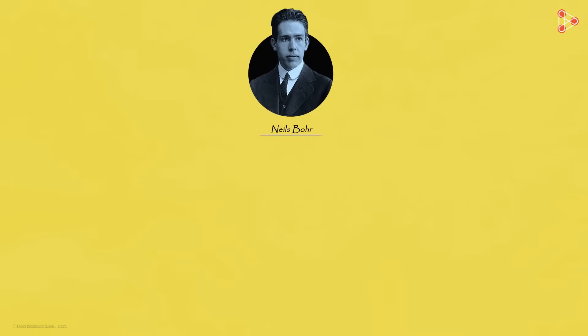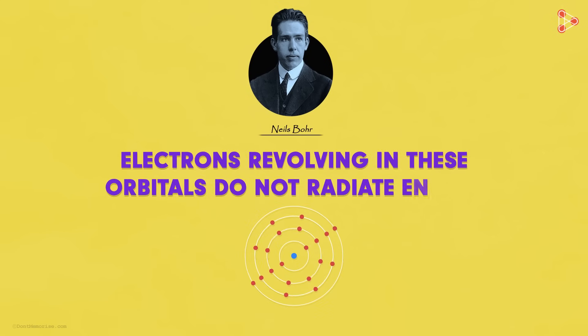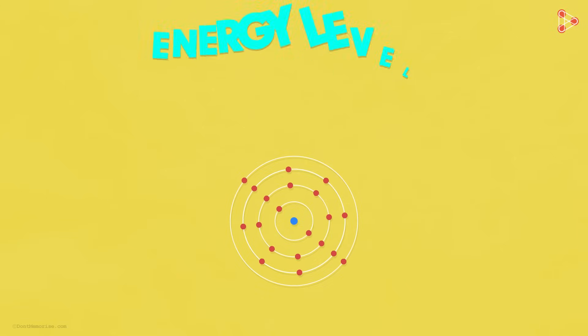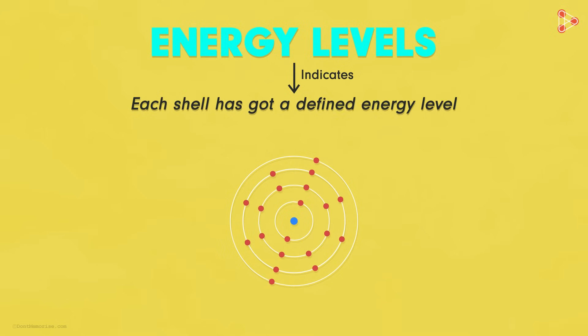Now the name energy levels gets us to an important concept. Niels Bohr suggested that the electrons revolving in these orbitals do not radiate energy. This is justified when we use the term energy levels, because it indicates that each shell has got a defined energy level. That means when the electrons revolve in these shells, they do not liberate any form of energy.